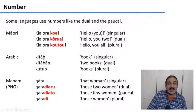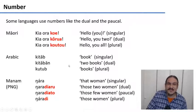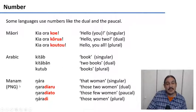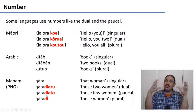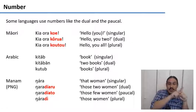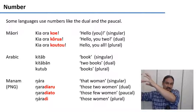Likewise, in Arabic we have the singular and the plural — 'Kitab' and 'Kutub' for book and books — but you can also have the dual 'Kitaban,' meaning two books. In the language Manam from Papua New Guinea, 'Ngara' means that woman, 'Ngarradi' means those women, 'Ngarradiaru' means those two women, and 'Ngarradiato' means those few women — making a four-way distinction between one, two, a few, and many women.